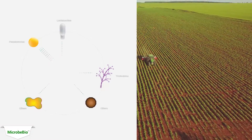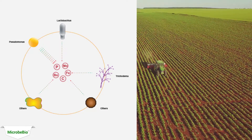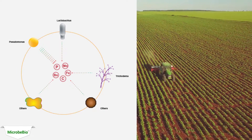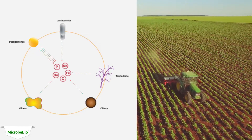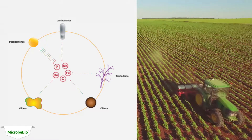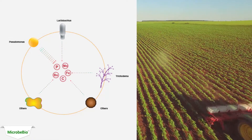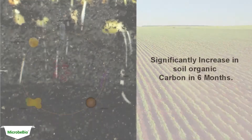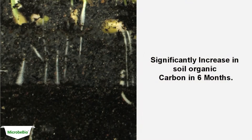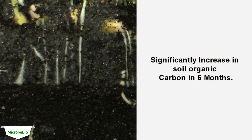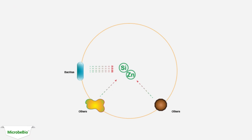The Pseudomonas, Lactobacillus, and Trichoderma found in the product solubilize phosphate, molybdenum, boron, carbon, and iron. And the Bacilli solubilize silicate and zinc, making all of these rich nutrients available for plant health and growth.